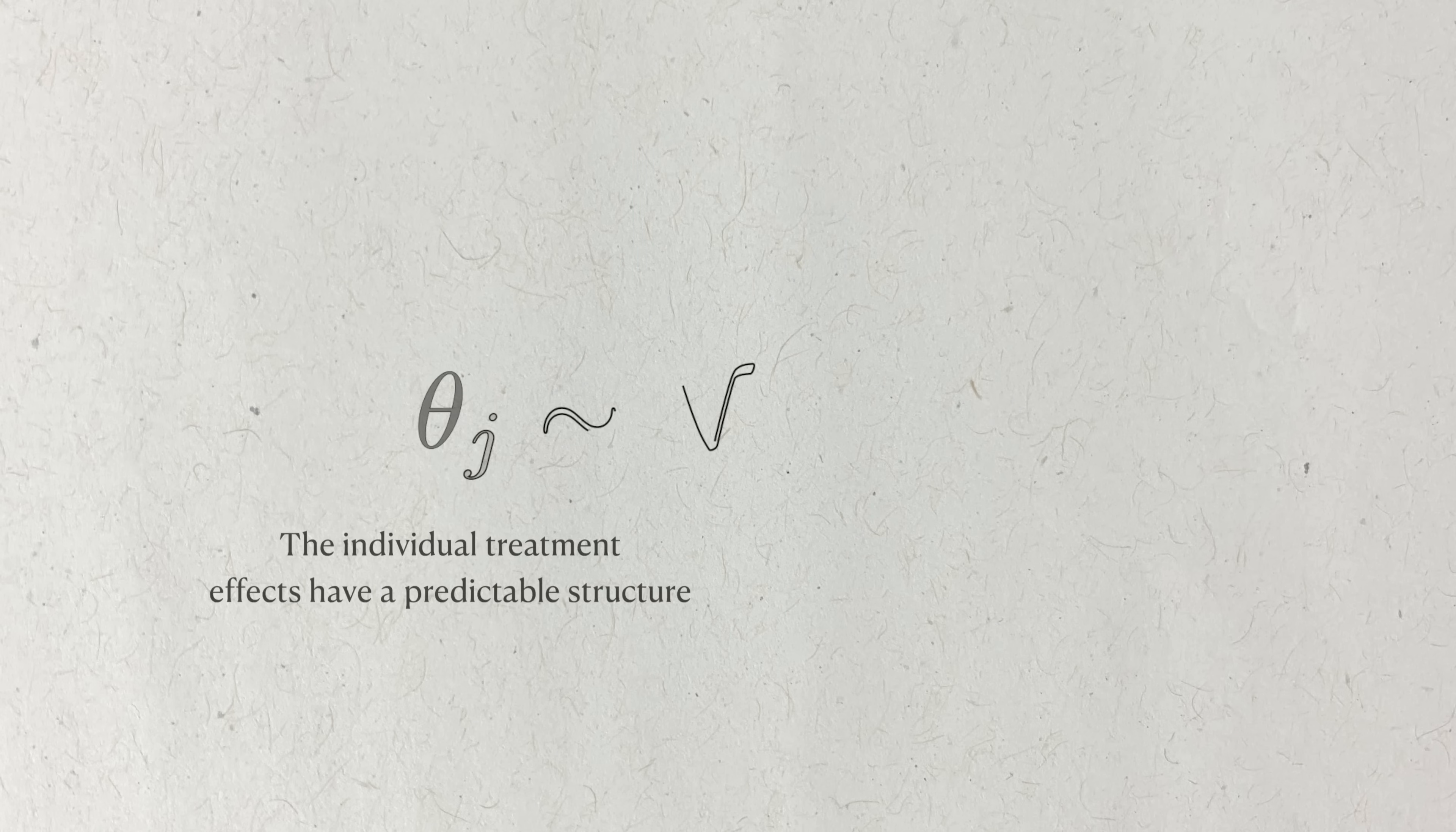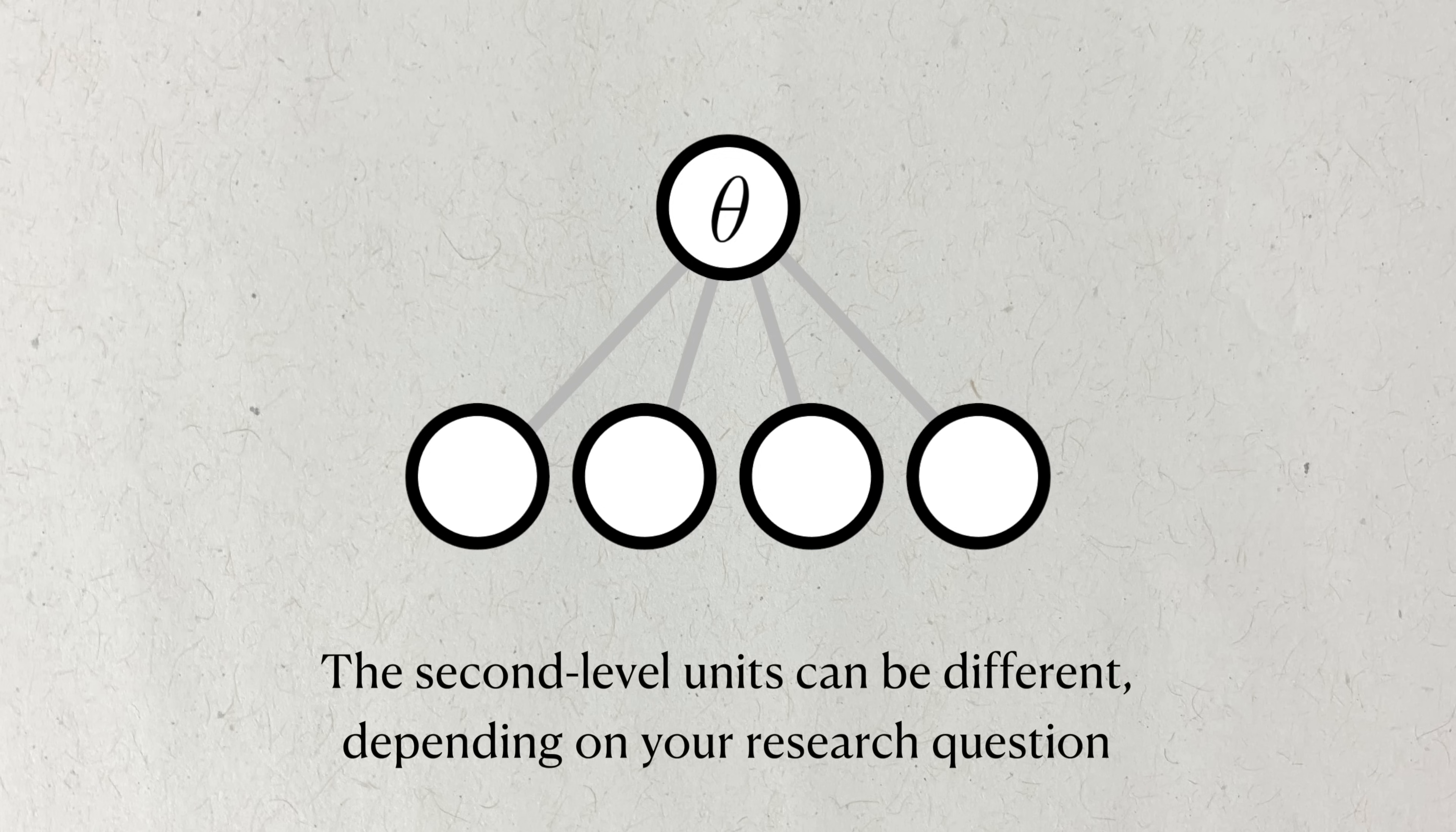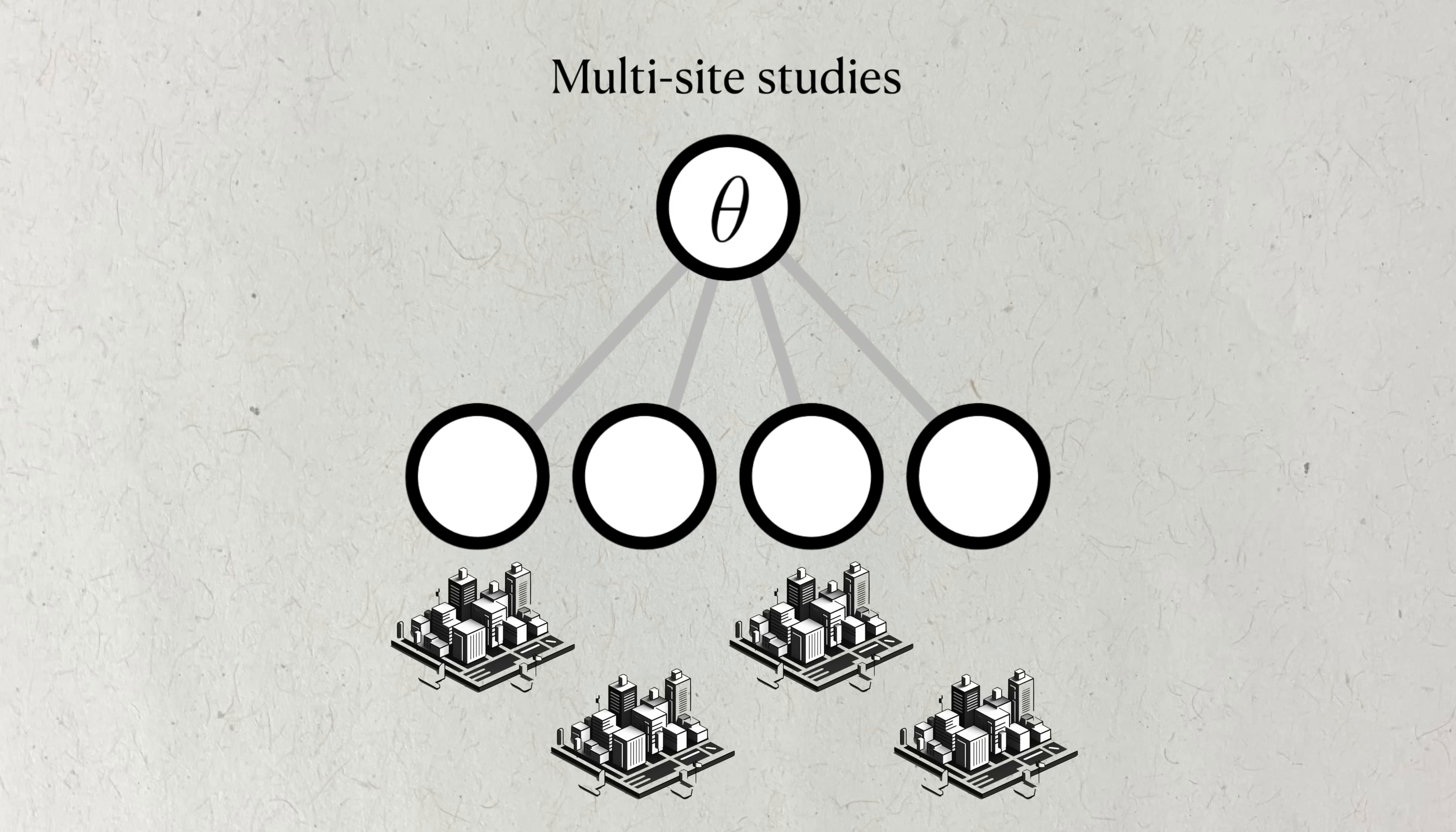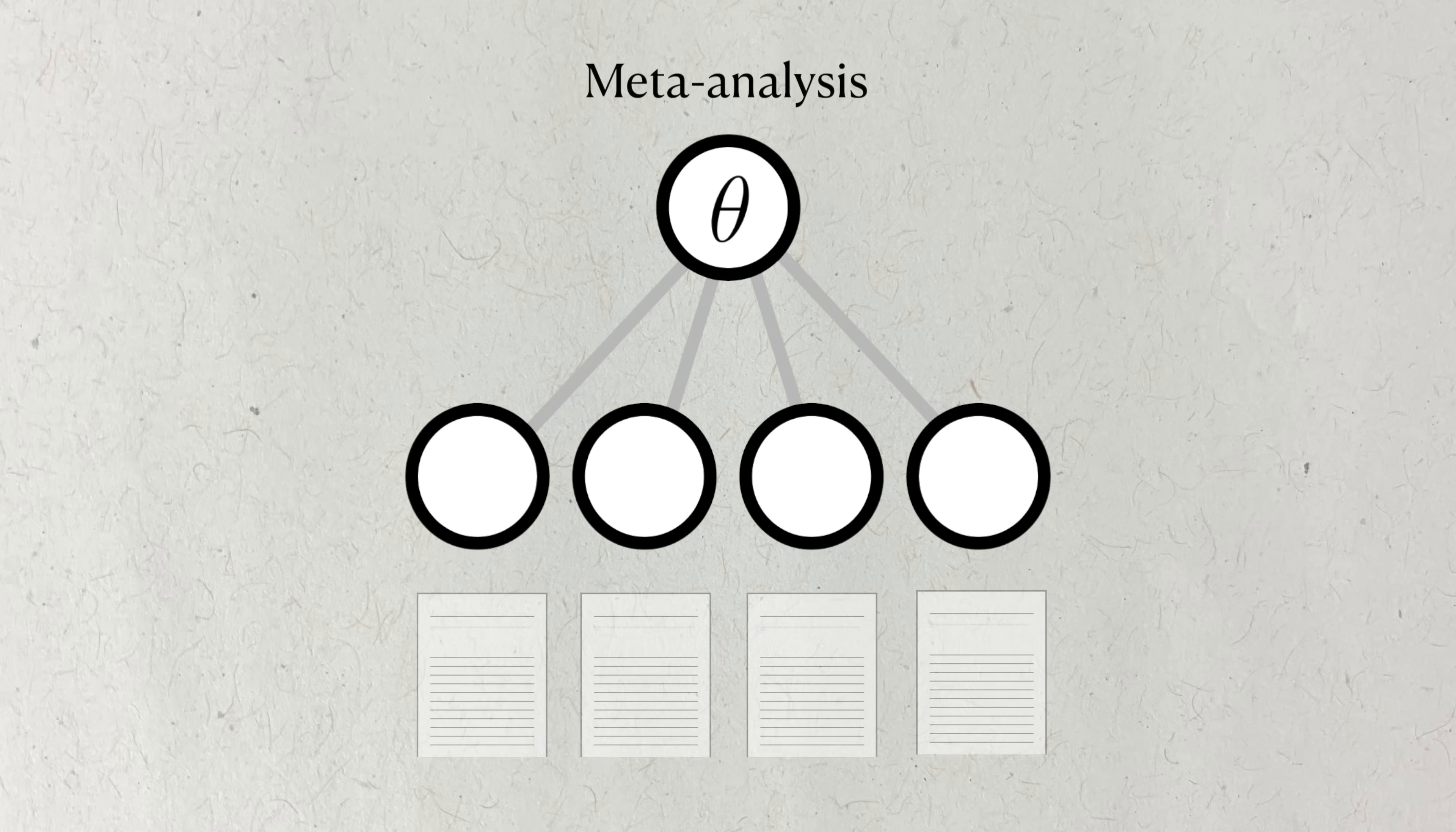In an n-of-one context, the first level might be a normal distribution, centered at some population treatment effect theta, with some variance sigma squared. In different contexts, the units of the second level of the model could be different things. In a study taking place over many locations, these may be different hospitals or cities, something to indicate a cluster of related units. In a basket trial, each second level unit is a specific disease, and we suspect that their treatment effects will be similar because they share a common mutation. In meta-analyses, the second level units could be estimated effects from individual research studies.